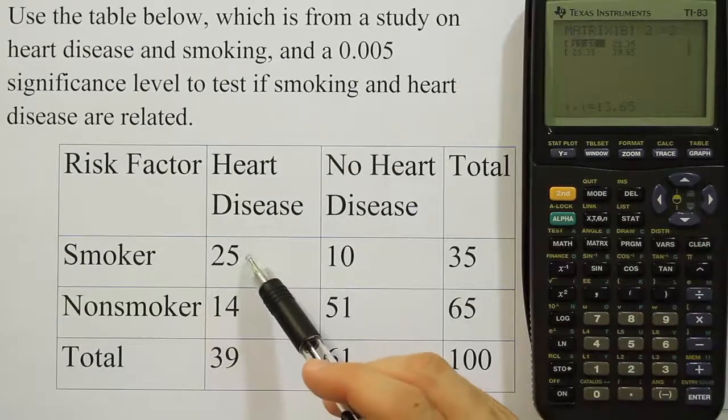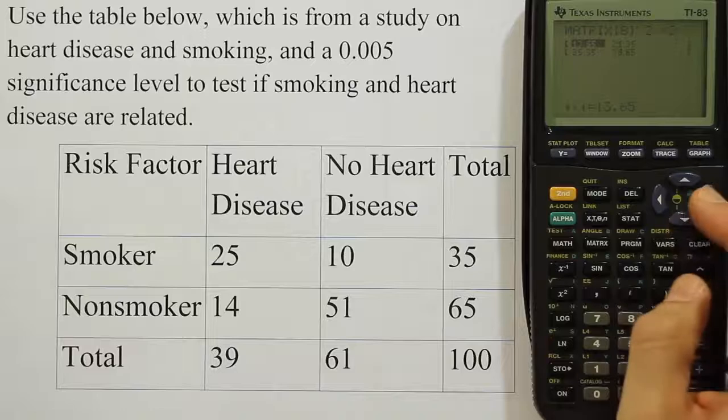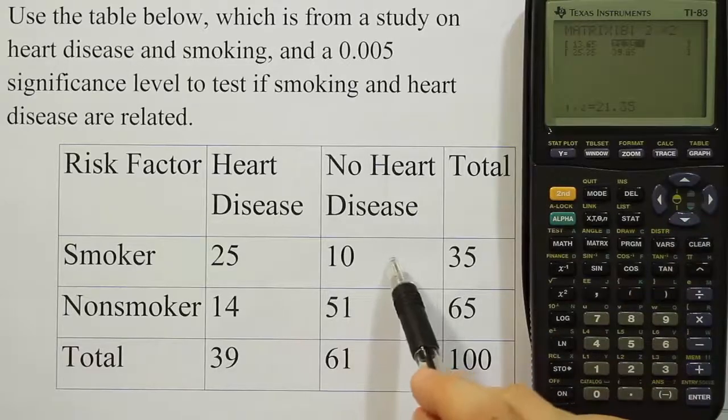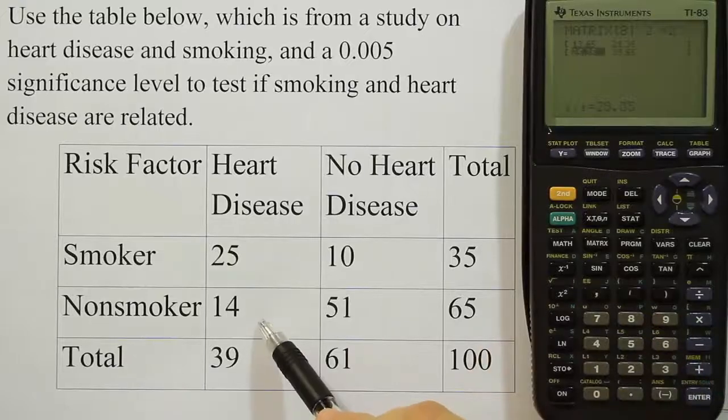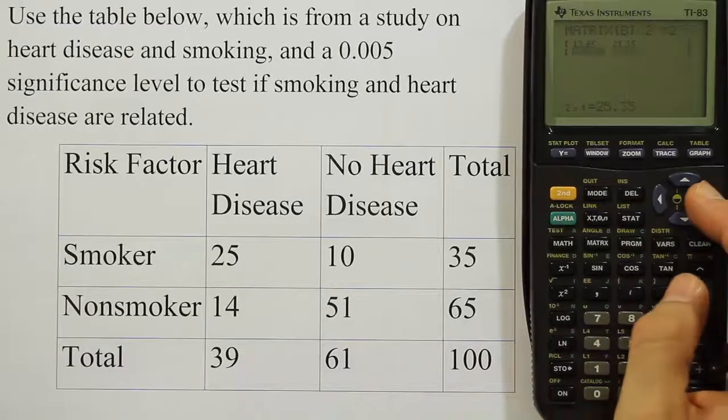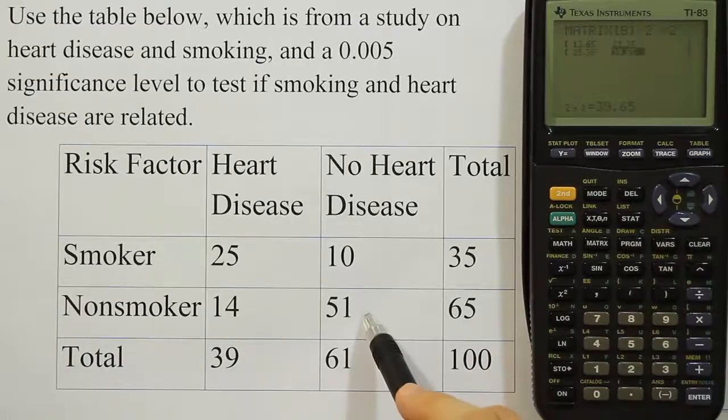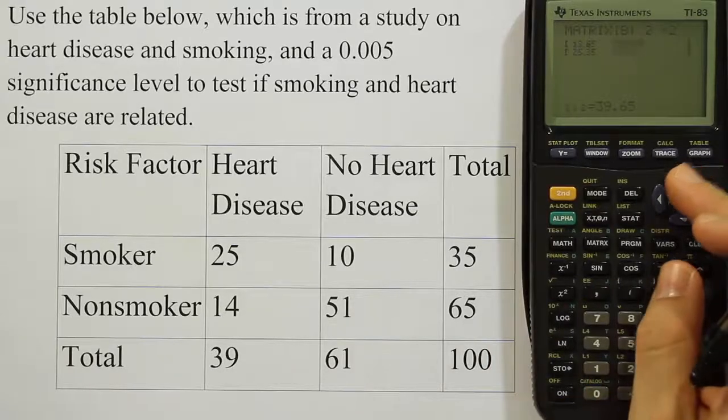For the first cell, they expected the number to be about 13.65. For the second cell, it would be supposed to be 21.35. For the cell here, it's supposed to be 25.35. And here, it's supposed to be 39.65. So those are our expected values.